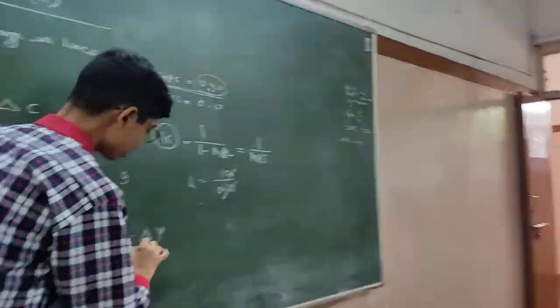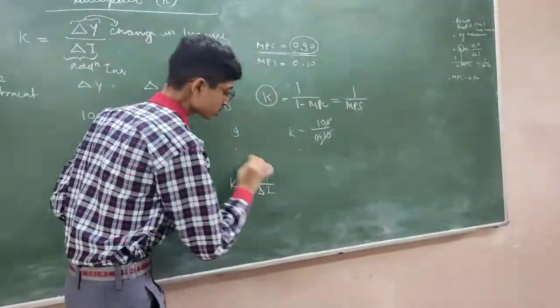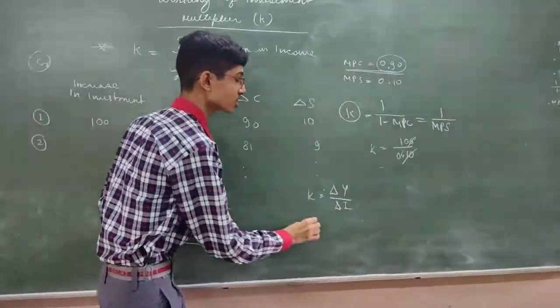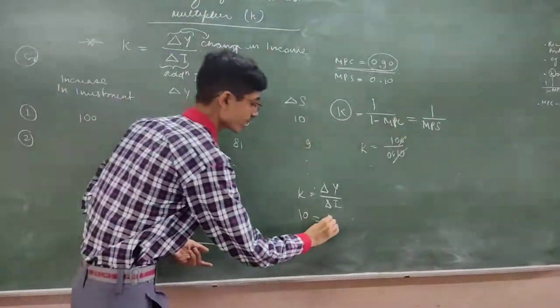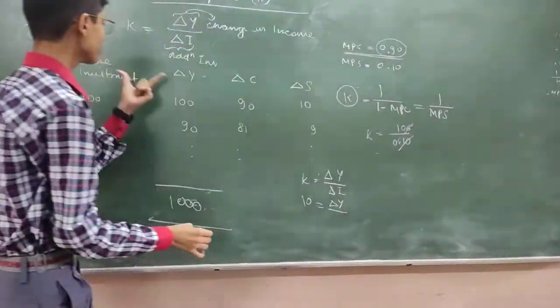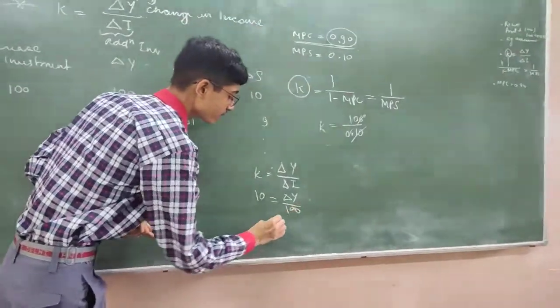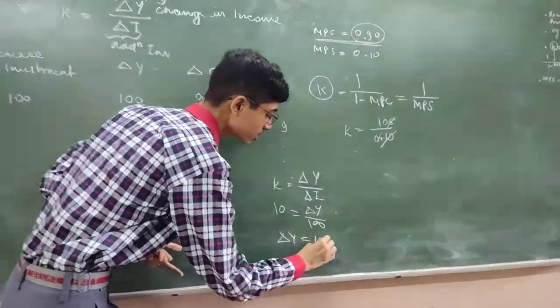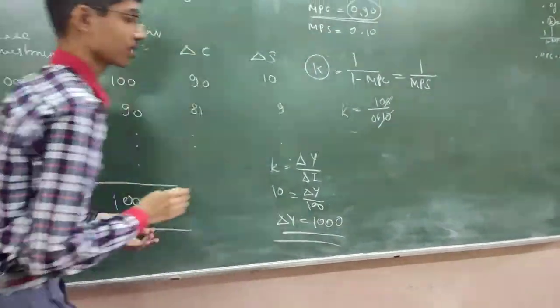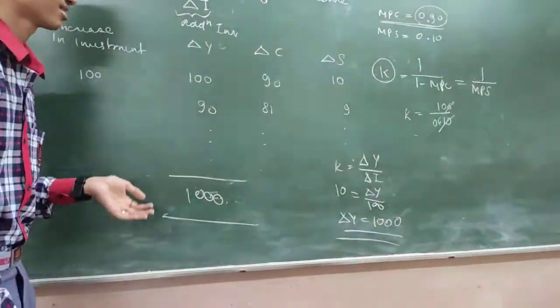How would we verify it? K is equal to change in income upon change in investment. So K is 10, change in income we will find. Change in investment is 100. So change in income is 1000. That figure has come here.